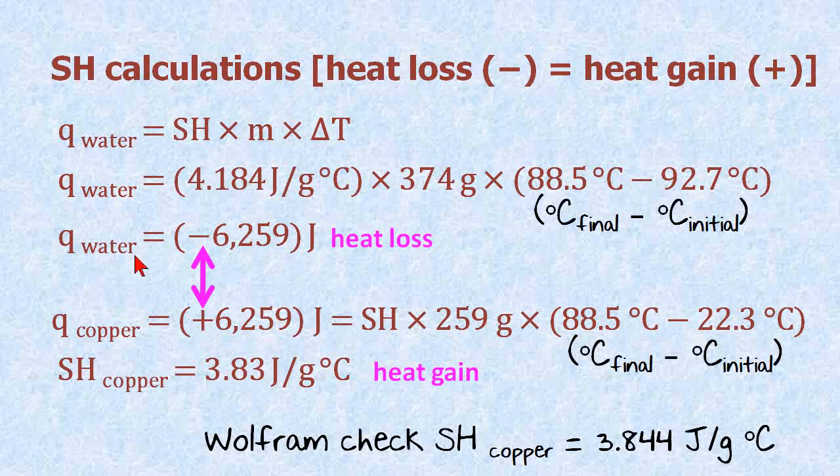And we simply set this equal to the heat gained by the copper. So we change the sign. That's the critical step here. We change the sign to positive. And we rewrite the equation again for copper. And we're looking for specific heat. That is what we do not know. We know that the copper bar weighed 259 grams.